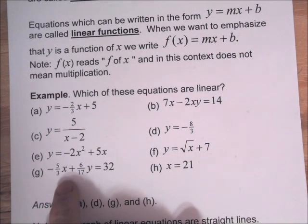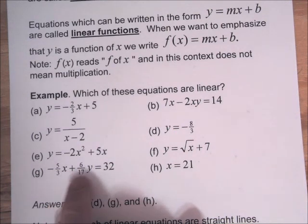G does fit the form. We have a number times X plus a number times Y equals 32. So that's linear.